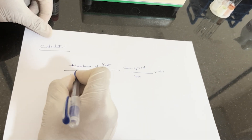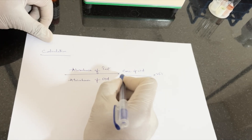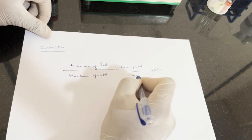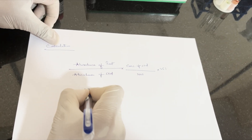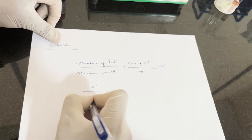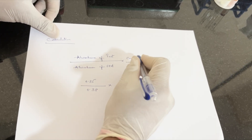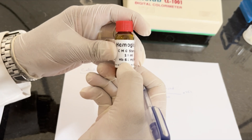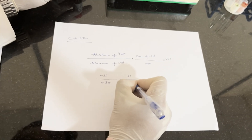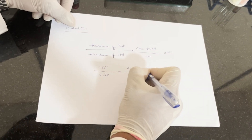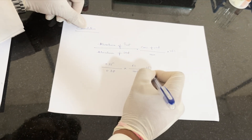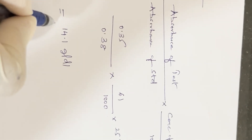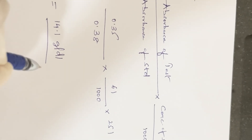Coming to the calculation part: the formula is absorbance of test divided by absorbance of standard, multiplied by concentration of standard, divided by 1000, multiplied by 251. Absorbance of test is 0.35, absorbance of standard is 0.38, concentration of standard is 61 mg per deciliter, divided by 1000, multiplied by 251 — which is the dilution factor for Drabkin's reagent and blood sample. After calculation, the value of hemoglobin is 14.1 grams per deciliter.